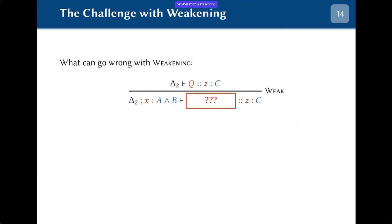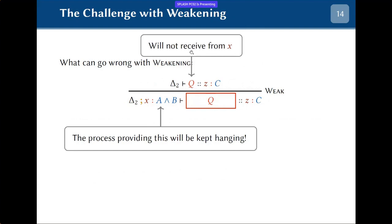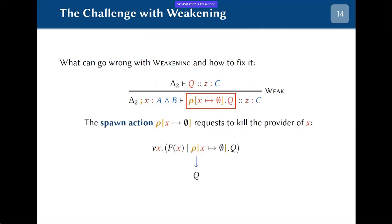This spawn action is also useful for the weakening case. In weakening, we have a protocol sending A, but Q doesn't really need it and won't use it — leaving the provider of x hanging. Instead we insert a dropping/killing spawn action that has the effect of removing and killing the provider of x from the context, working recursively if that provider had further dependencies.